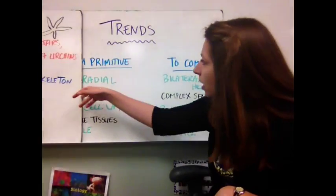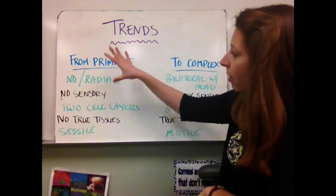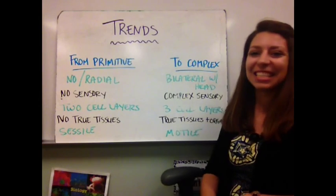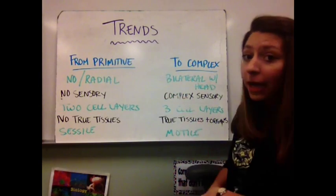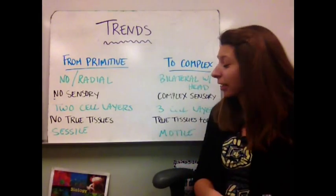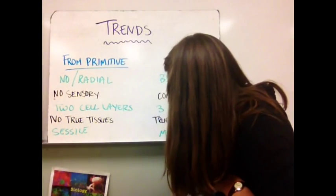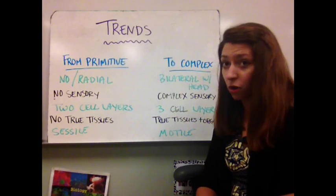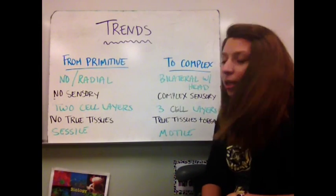Before we go, let's look at a few trends in animal evolution. In the primitive animals, we have either no symmetry or radial symmetry, and then we progress to something more complex with bilateral symmetry and a head. Primitive organisms don't have sensory organs, while complex organisms do have complex sensory apparatuses. Primitive organisms only have two cell layers, where complex organisms are going to have three — the endoderm, mesoderm, and ectoderm. The primitive organisms have no true tissues, whereas the more complex ones have true tissues and real organs. Primitive animals are sessile and don't move, while complex animals are motile and can move around.